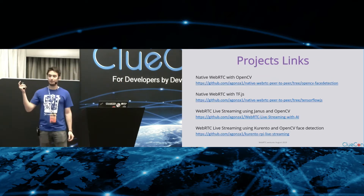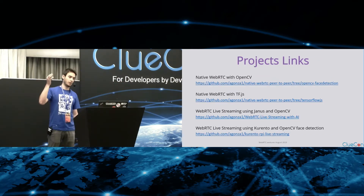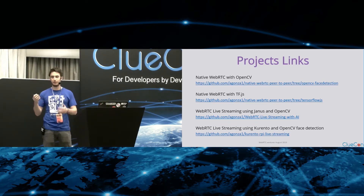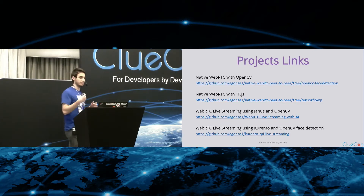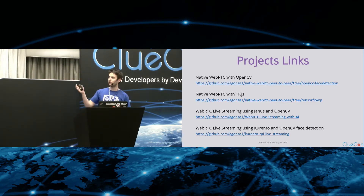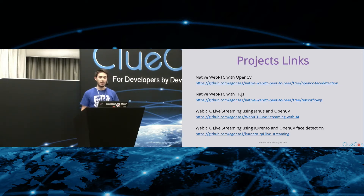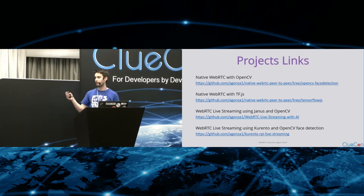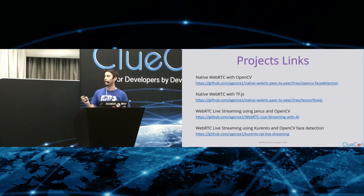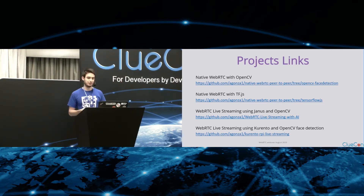Here I have the four projects I worked on and showed today. They are open source: the one for face detection for peer-to-peer, the one for background removal using TensorFlow.js, and the others using Janus with OpenCV for Node.js, and Kurento with OpenCV — both doing live streaming.